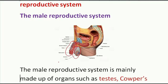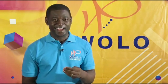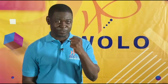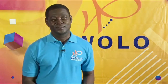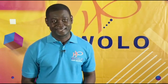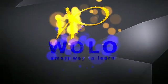Within the scrotal sack, we have two oval-shaped organs lying side by side. They look like balls, which is why people commonly refer to them that way. You remember the name — the testis. There are two of them, found in the scrotal sack hanging underneath the penis.